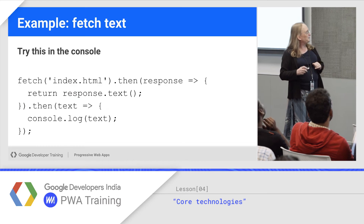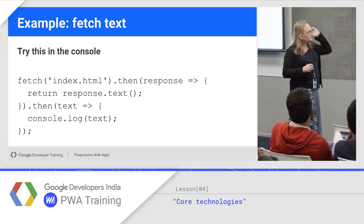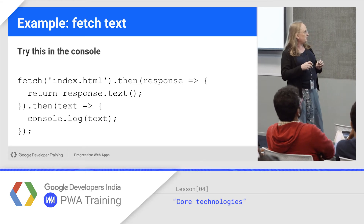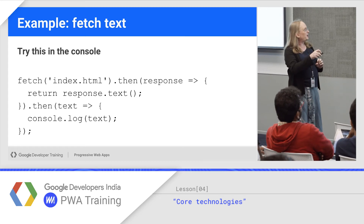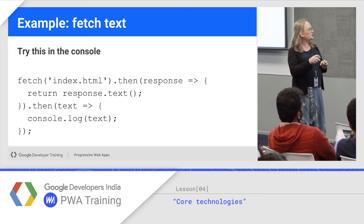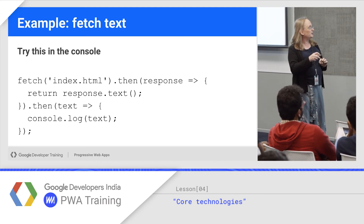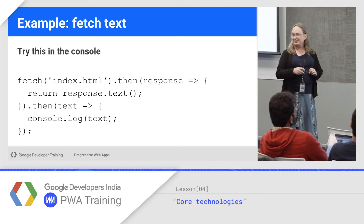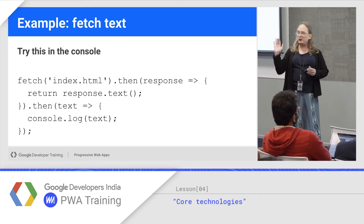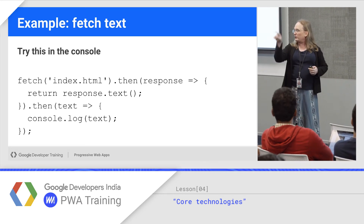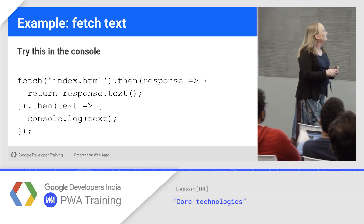Let's try some examples. If you do this in the console — we'll do this in a minute — we're going to fetch a file, index.html. Then take the response object, pull its text out, and log it to the console. By the way, what does this chain of dots look like? It's a pipe — basically just piping from one function to the next.